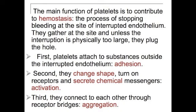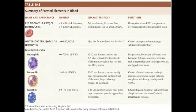Table 19.3 begins on page 711 and goes to page 712. It summarizes the formed elements in the blood, showing the name, a cartoon of each formed element, the number of these elements, their characteristics, and their functions. Please study this table on your own time.